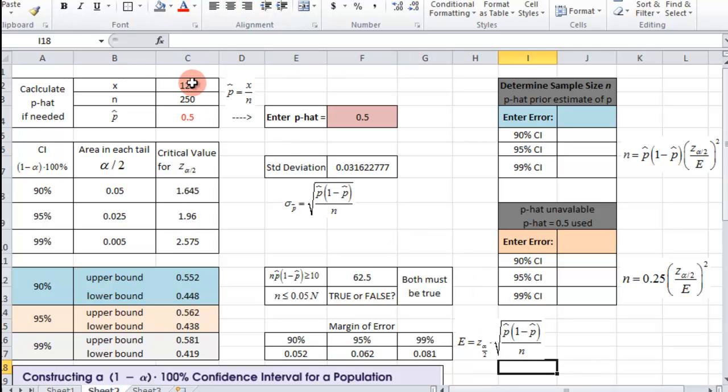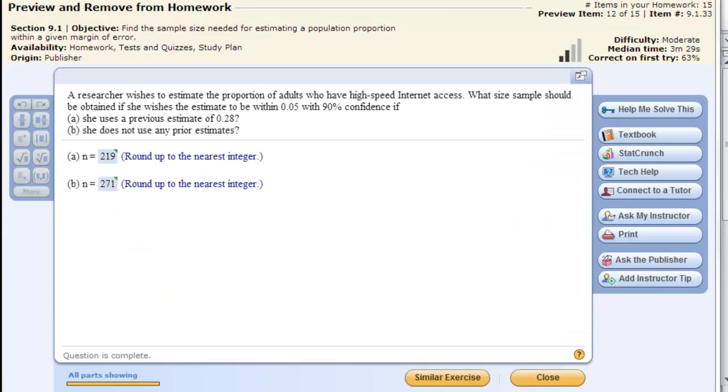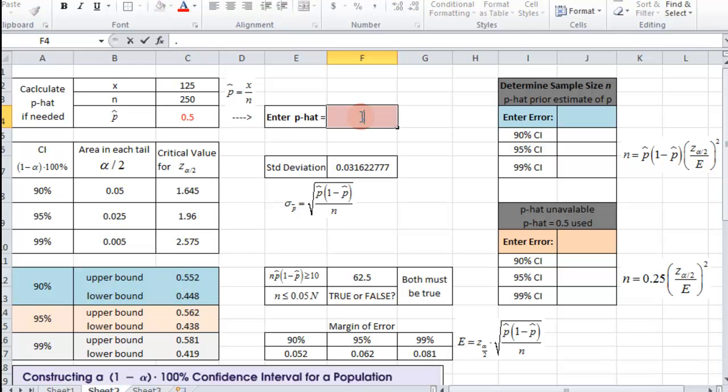So far we have all this just by entering the x and the n and this p hat. All this information is automatically calculated here. You'll also come across some problems where you need to find a sample size. So for example, a researcher wishes to estimate the proportion of adults who have high speed internet access. What size sample should be obtained if they want to be within 0.05 with a 90% confidence, and then she uses a previous estimate of 0.28. So we go into here, that's our p hat, the 0.28 is the previous estimate. And then we're going to use this information over here, and I'm going to enter my error. The error was 0.05.